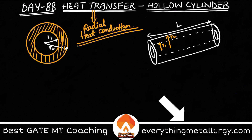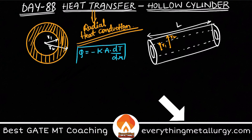We all know Fourier's Law for heat conduction: Q equals minus k·A·(dT/dr), where the gradient is taken along the radius. Here, dT/dr is used because heat transfer is occurring radially in the hollow cylinder.